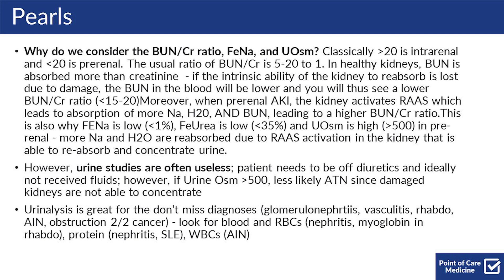However, please note that urine studies are often useless. This is because patients need to be off diuretics and ideally have not received fluids. That being said, if the urine osms are greater than 500, it's a lot less likely to be ATN, since damaged kidneys are not able to concentrate that much.